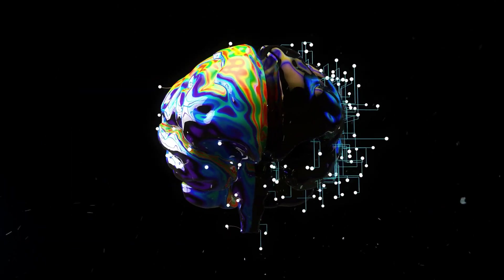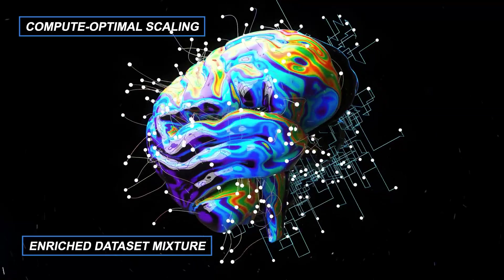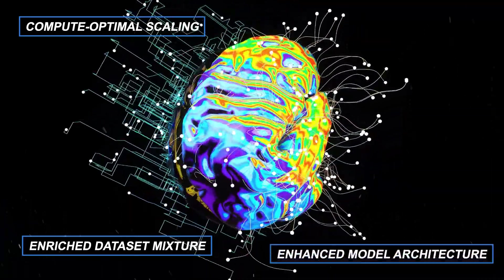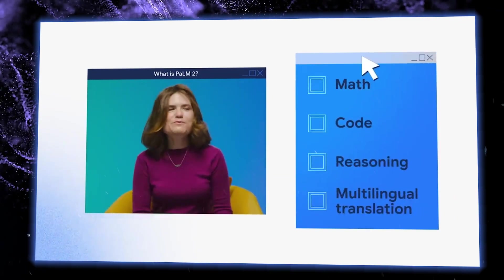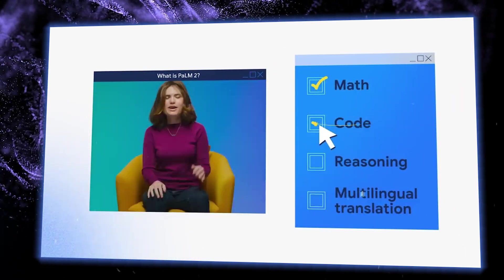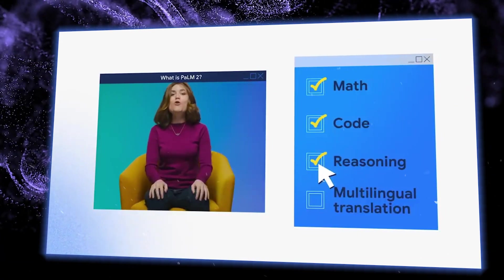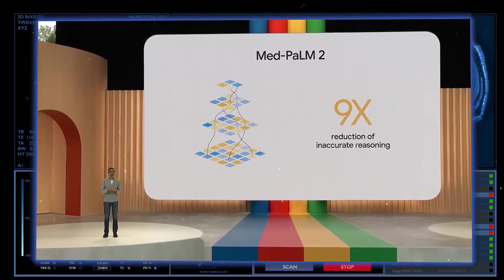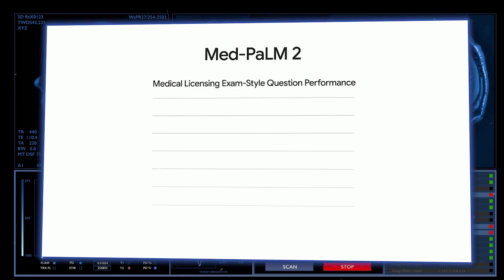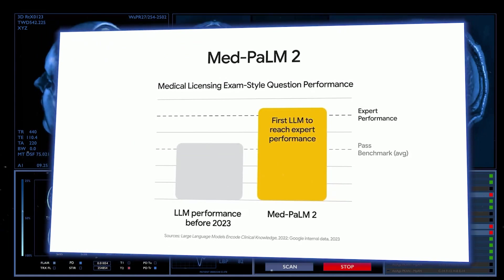By combining compute-optimal scaling, an enriched dataset mixture, and enhanced model architecture, PaLM 2 emerges as a powerful language model that delivers outstanding performance in advanced reasoning, translation, and code generation tasks. Its efficient design and comprehensive training make it a valuable asset in a variety of applications and domains.